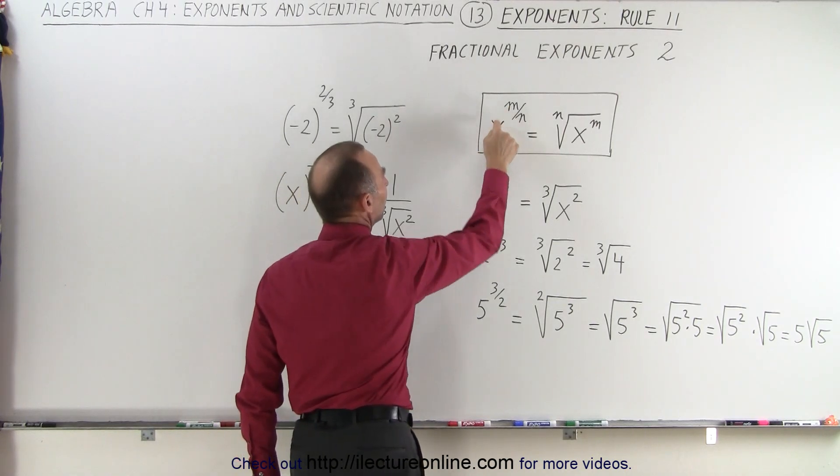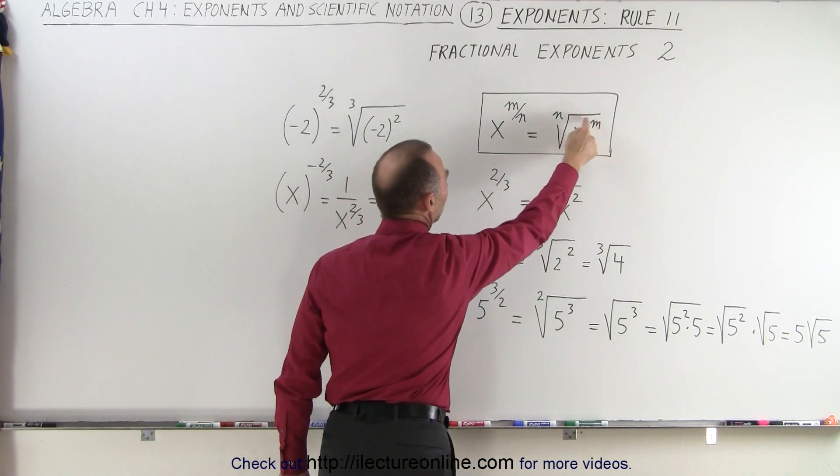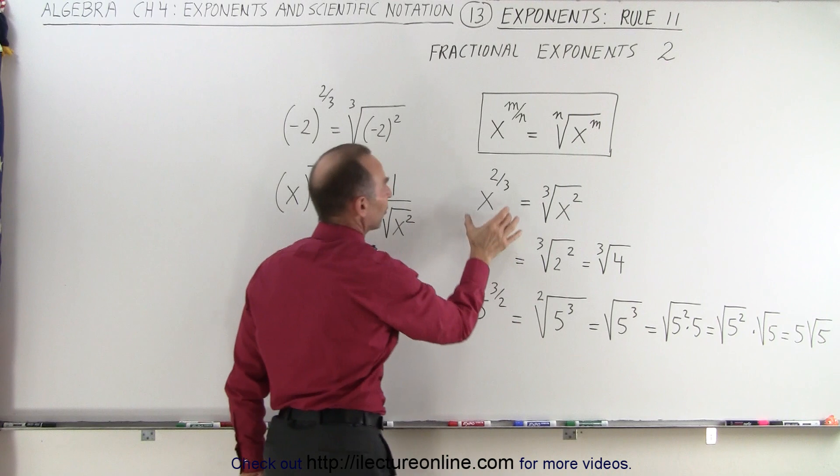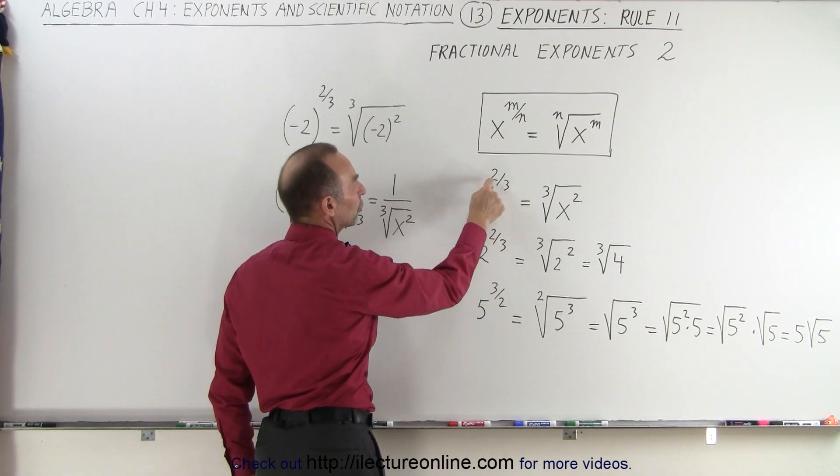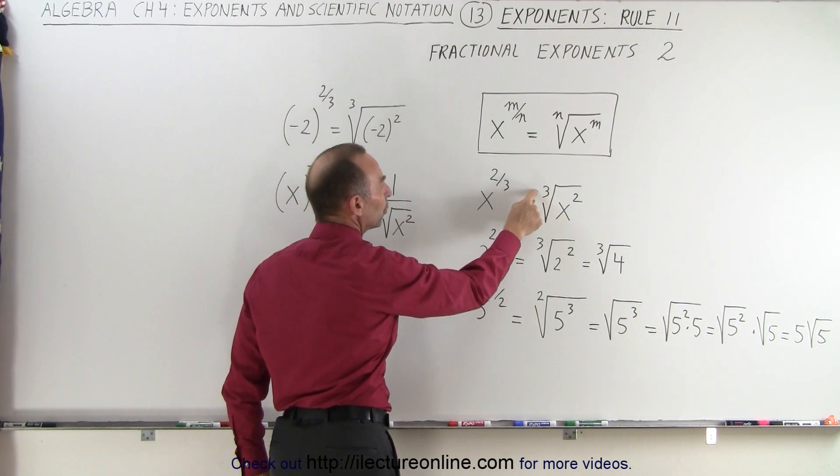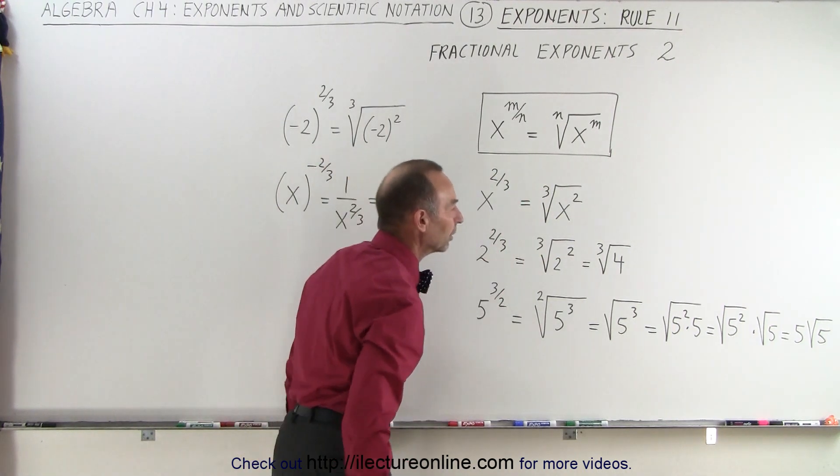In other words, if this is a 2, that means that we get x to the second power inside the radical. Here's a simple example: x to the 2/3 power is equal to the cube root of x quantity squared.